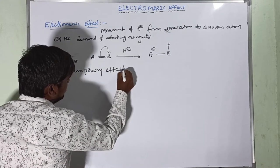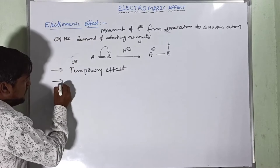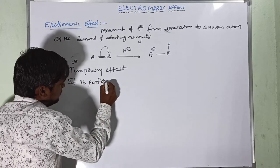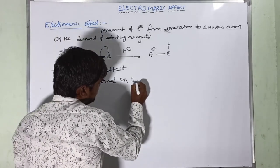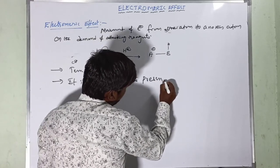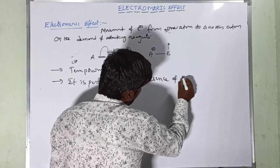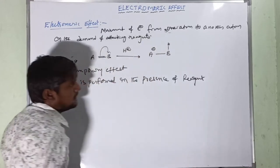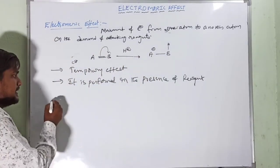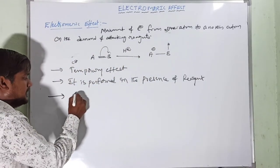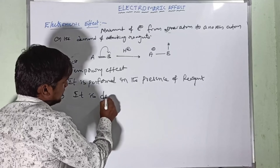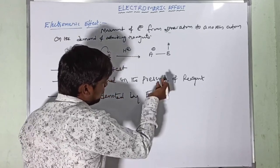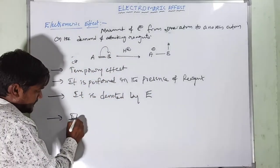This effect is observed in the presence of a reagent only. It is denoted and represented by curly arrows. The movement of electrons is represented by curly arrows.